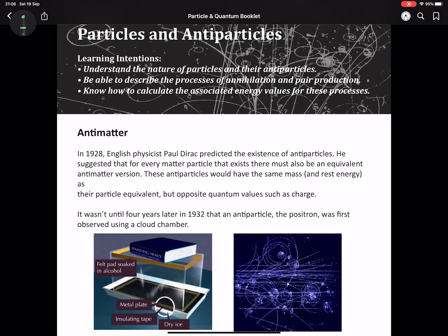Antimatter is a peculiar idea. It's the idea that for every single particle that exists there is another version, an alternate version. This antimatter version of a particle will have the same mass, which is the same as saying its rest energy will be the same, but its quantum values will be opposite. Now the only quantum value you're aware of at this stage is charge, so that means any positively charged particle would have a negative antiparticle and vice versa.